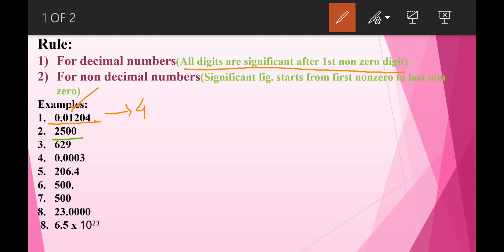The next example is 2500, which is a non-decimal number. According to our rule for non-decimal numbers, significant figures start from the first nonzero to the last nonzero digit. Here the first nonzero digit is 2 and the last nonzero digit is 5, so the significant figures are only 2. For another non-decimal number shown here, the significant figures are 1, 2, 3 — so the significant figure count is 3.